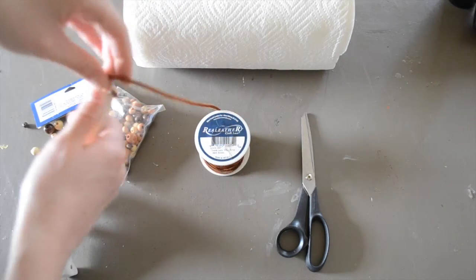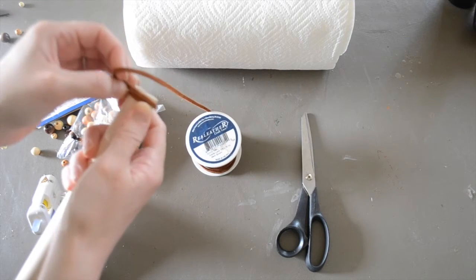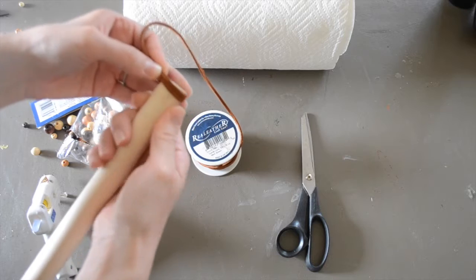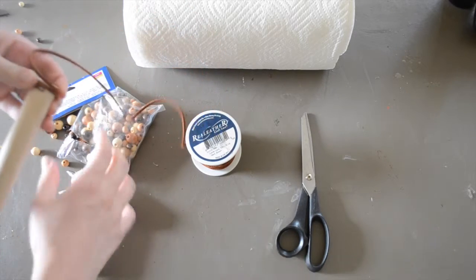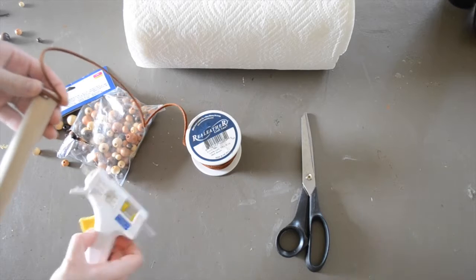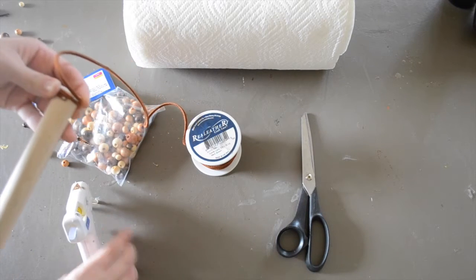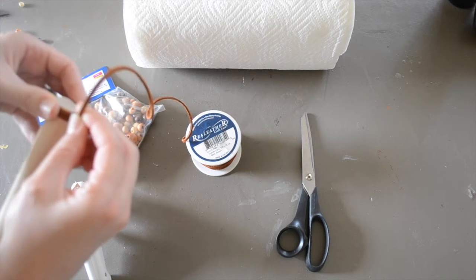So then I'm going to wrap that around two times until I've covered the entire end of the dowel. And then when I reach the end, I'm going to apply another drop of hot glue and secure that as well.